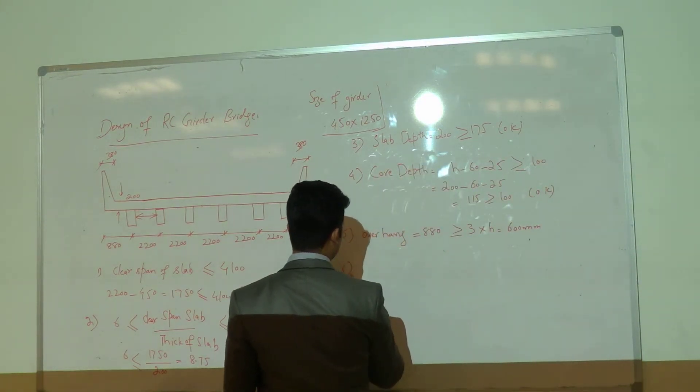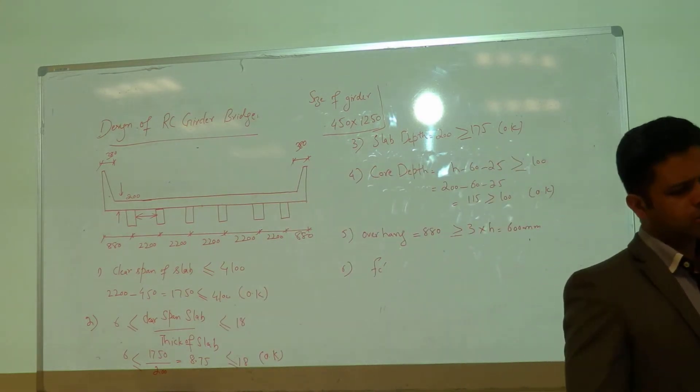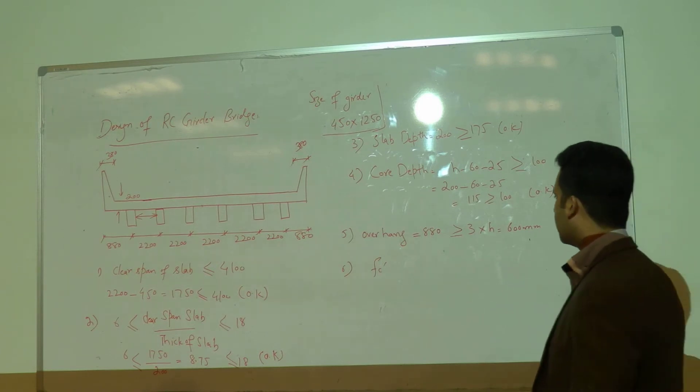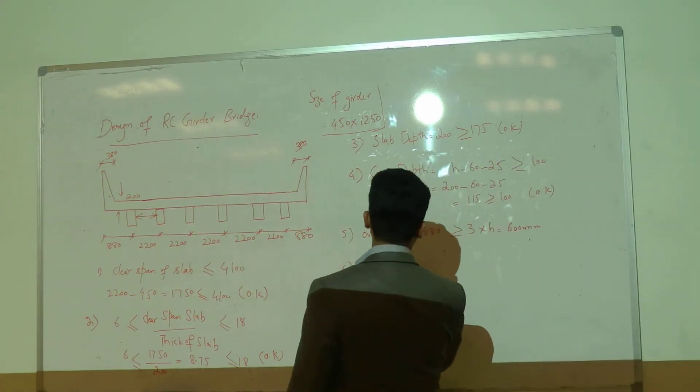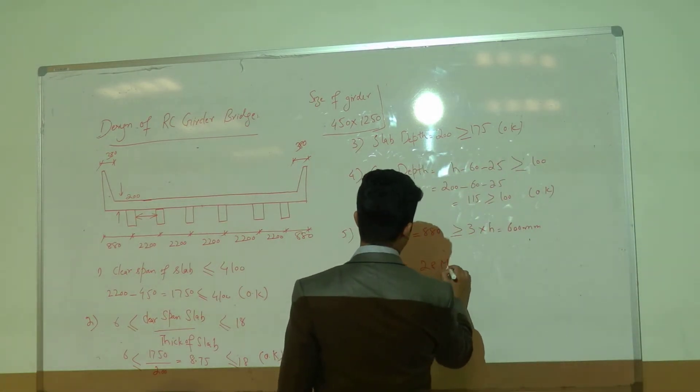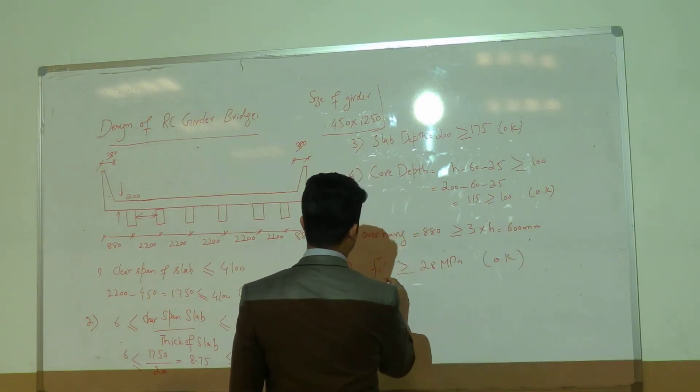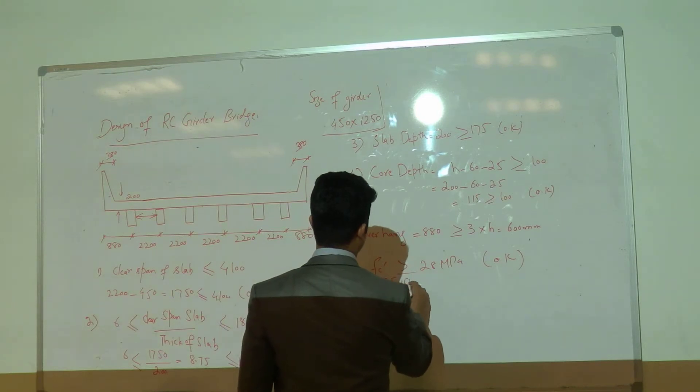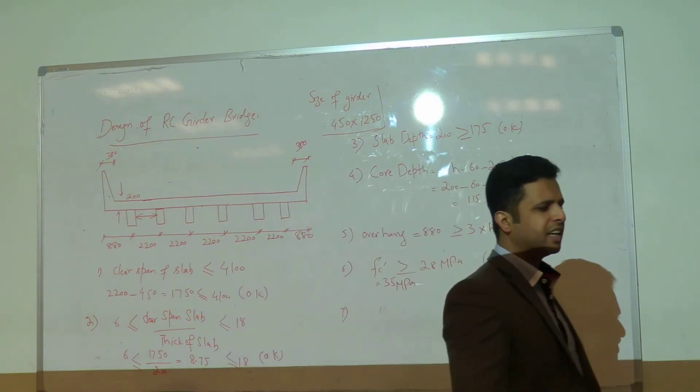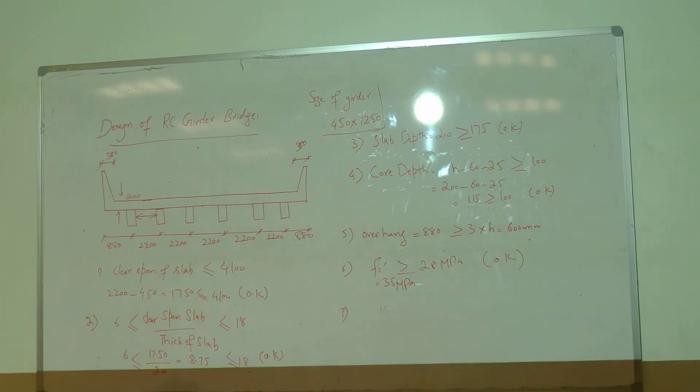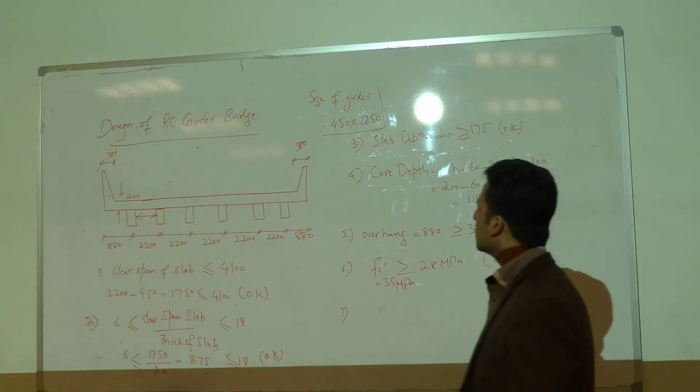Now the last condition - the fc prime should be greater than or equal to 28 megapascal. We have 35, which is fine. And number 7 - it is saying that if you use this method, you should provide the shear connectors at a spacing of 600mm center to center.